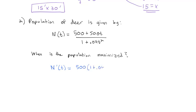minus the derivative of the bottom, which is 0.08t, times the top, 500 plus 500t. And we need to divide all of that by the denominator squared.